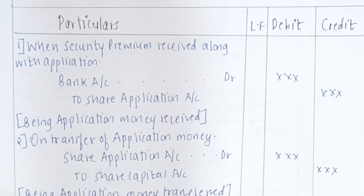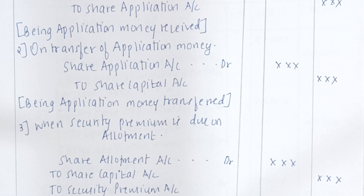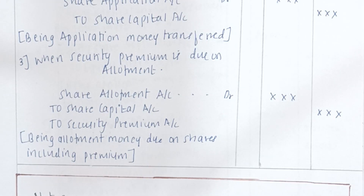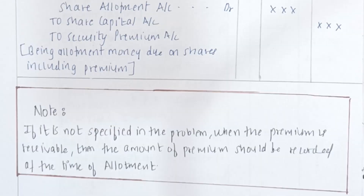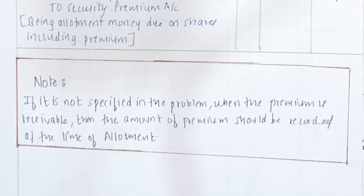When security premium is received with application: Bank Account debit to Share Application Account — being application money received. On transfer: Share Application Account debit to Share Capital Account — being application money transferred. When security premium is due on allotment: Share Allotment Account debit to Share Capital Account and to Security Premium Account — being allotment money due including premium. Note: if it is not specified in the problem when the premium is receivable, the amount of premium should be recorded at the time of allotment.